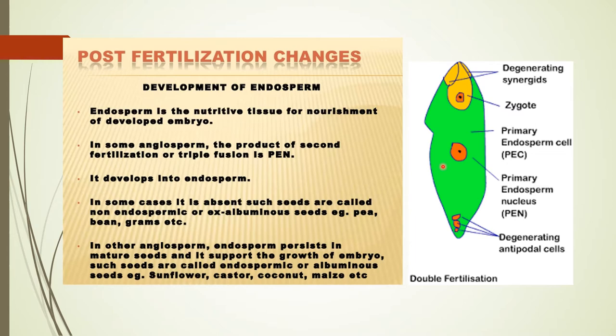A very relatable example: the tender coconut water that we drink is actually free nuclear endosperm — at that stage there is no cell wall formation. The white kernel of coconut that we eat is the cellular endosperm. This is a common exam question — what is the portion of coconut we drink, and what is the portion we eat? The water we drink is free nuclear endosperm, and the white kernel we eat is cellular endosperm. This is the development of endosperm that takes place after fertilization.